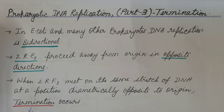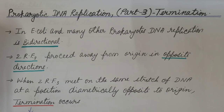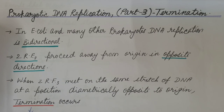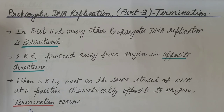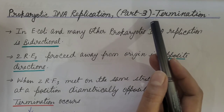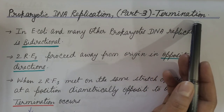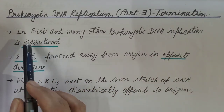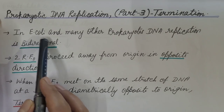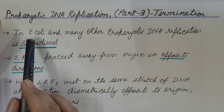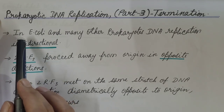Hello friends. We are discussing prokaryotic DNA replication. We have already discussed about the initiation and elongation steps of prokaryotic DNA replication — you can refer to my videos, the link is given in the description box. Today we are going to discuss about the termination step of this DNA replication. We will focus on E. coli for this discussion.